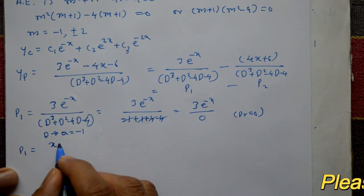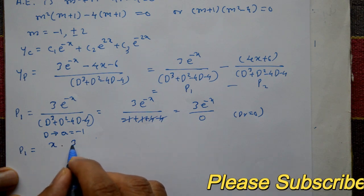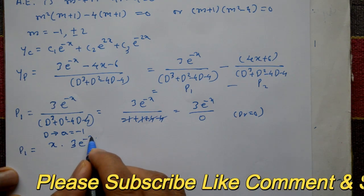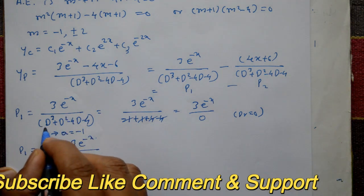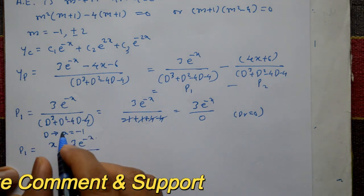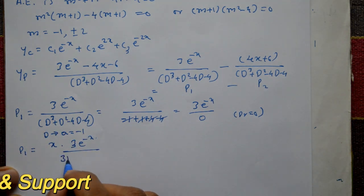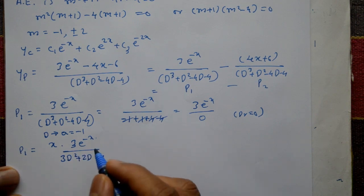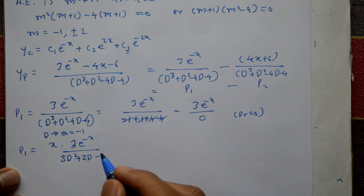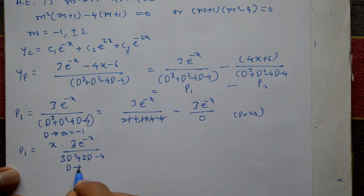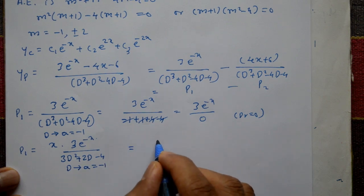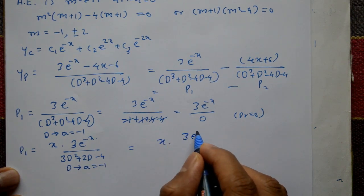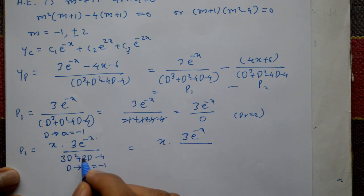When denominator is 0, P1 becomes x · 3e^(-x) / f'(D), where f'(D) is obtained by differentiating f(D) with respect to D, giving 3D² + 2D - 4. This is again Type 1 with D = -1.